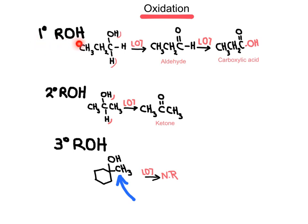In our first case, we have a primary alcohol — primary because we see two hydrogens here. When a primary alcohol is oxidized, it can produce an intermediate that is called an aldehyde. This aldehyde can continue oxidizing to produce a carboxylic acid. We can isolate an aldehyde if the oxidant used is a mild oxidant. If the oxidant is a very strong oxidant, the product will be directly the production of a carboxylic acid.